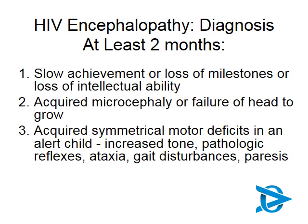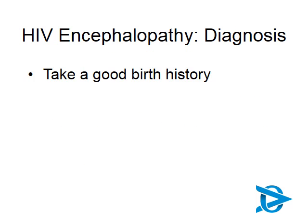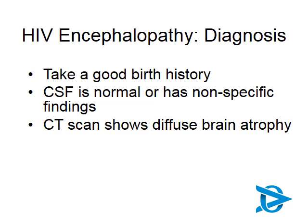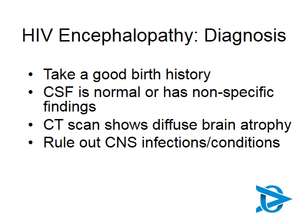The most common presentation in our setting is the child who is not achieving well at school or has loss of developmental milestones. Making the diagnosis is mostly dependent on clinical assessment. You need a thorough birth history to exclude other contributing factors. Usually one has to do an LP to make sure there are no other contributing conditions — normally the CSF will give normal or nonspecific results. A CT scan, if possible, will show diffuse brain atrophy. Rule out any other central nervous system infections or conditions that might be contributing.